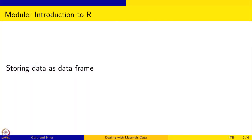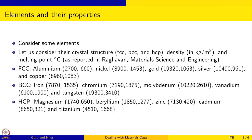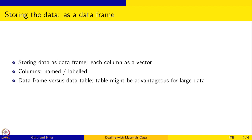We have already looked at storing data as a table and as a data table. This session is for storing the data as a data frame, and we are going to again consider the same data — elements with their crystal structure, density, and melting point. We have about 15 elements: 5 FCC, 5 BCC, and 5 HCP. The advantage of storing data as a data frame is that you can input it very easily — each column is input as a vector and you can name or label the columns.